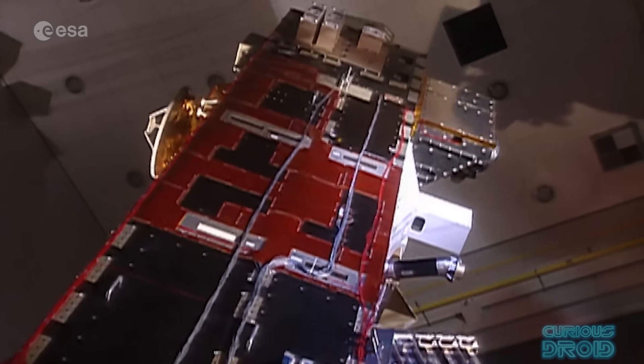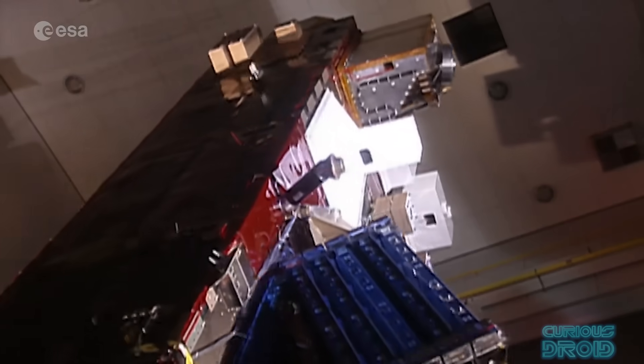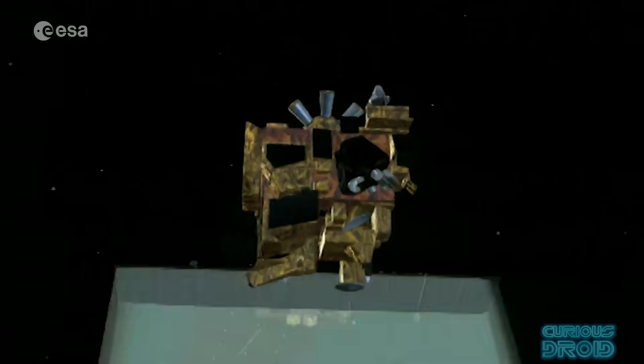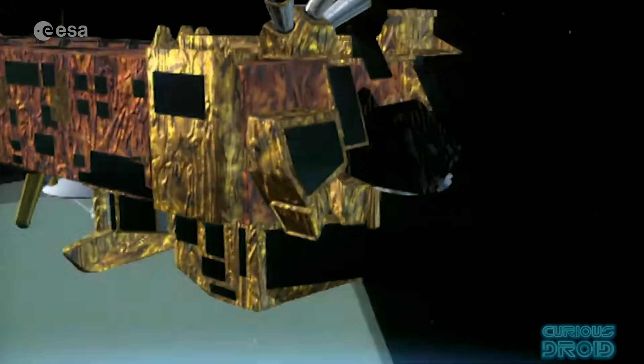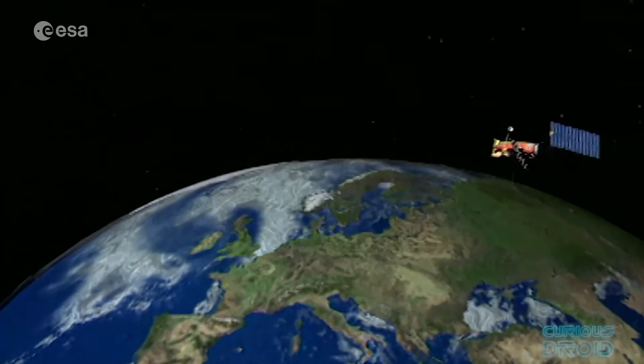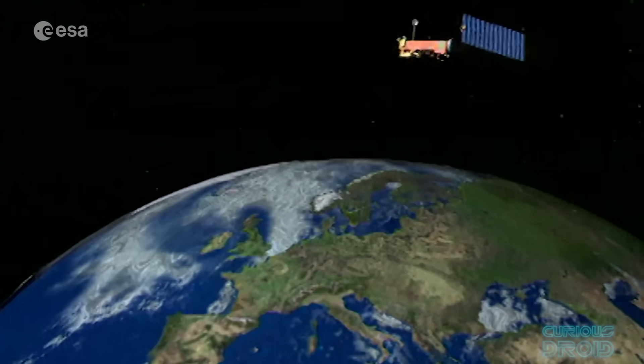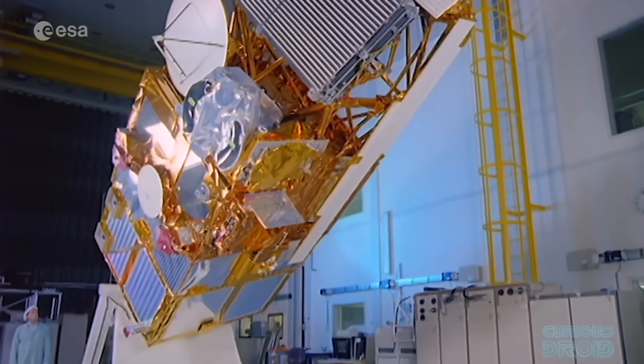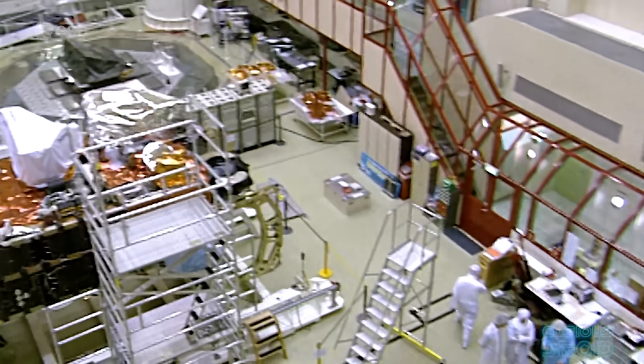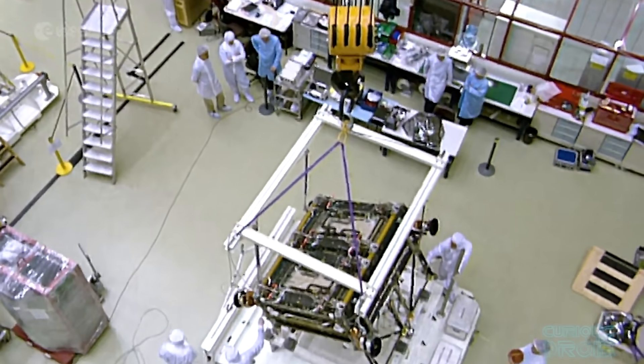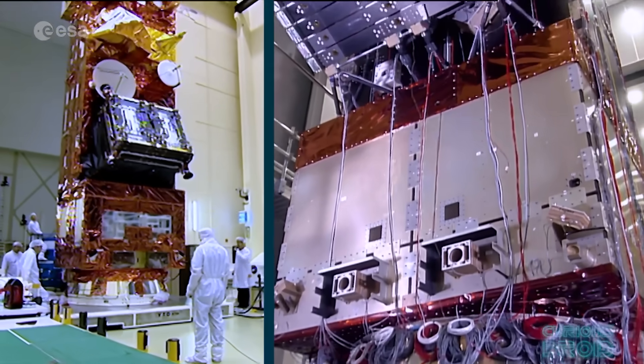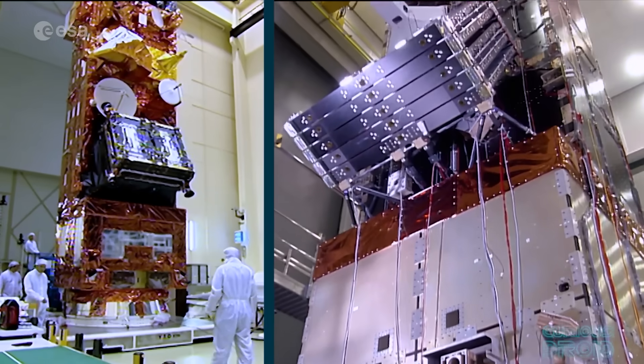Even the best run space agencies can make mistakes. Envisat, the largest civilian operated satellite at the time, was launched by the European Space Agency in 2002 with a planned mission life of 5 years, but it was kept going for 10 years before it became unresponsive to commands in 2012. This 8-tonne satellite measuring 26x10x5 meters is now classed as space debris and will take 150 years for its current 774 km orbit to decay and it will burn up.